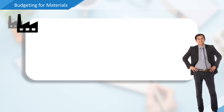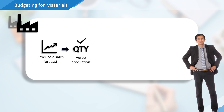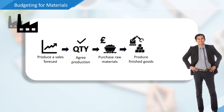You might expect this to be a simple case of producing a sales forecast to predict how many items you expect to sell, agreeing production and then purchasing the raw materials to produce and sell the goods required for the period. And whilst this isn't necessarily incorrect, there are some complicating factors.